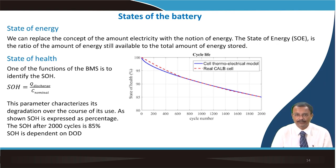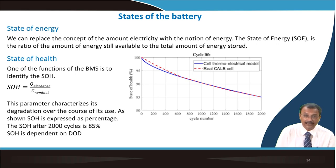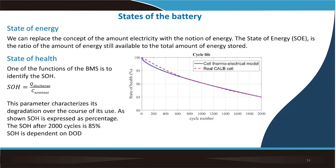As cycle number increases, the nominal charge progressively decreases — typically dropping to 85% at around 2000 cycles, which is quite typical for a good cell. State of health depends on the depth of discharge: deep discharging will not necessarily give this behavior. Significant modeling work is ongoing to predict state of health, with the dotted line being a fit to the experimental values.